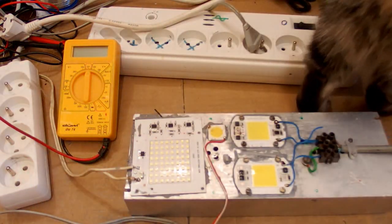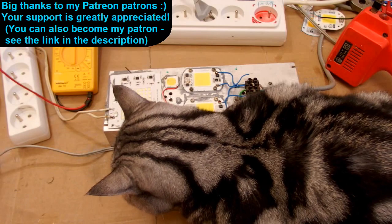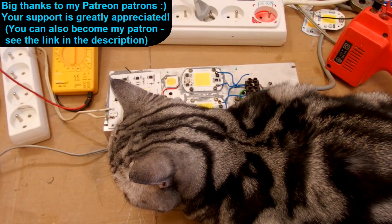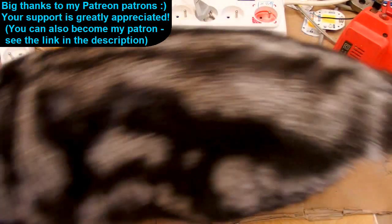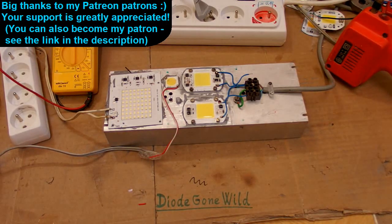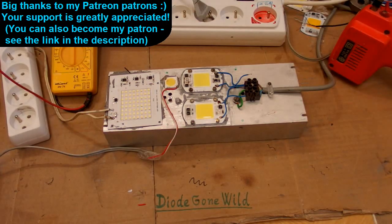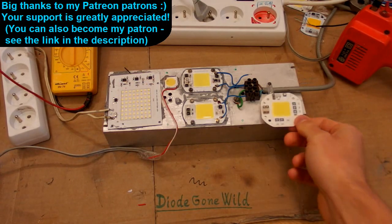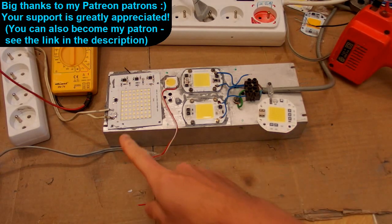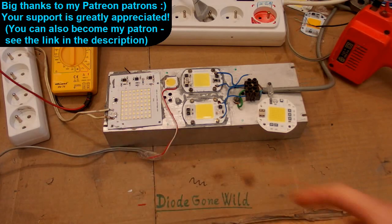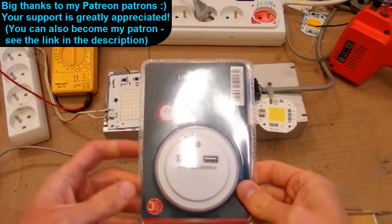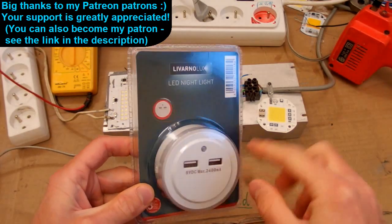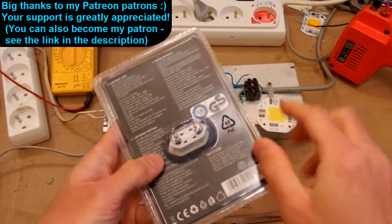And here is my cat of course. So this is DiodeGoneWild and see you in my next videos. And thanks to all of my patrons on Patreon. I really appreciate your support. And I also plan to take a look at even more main voltage LEDs like this one and some other power versions of this one and also this nightlight with a USB charger from Lidl supermarket.